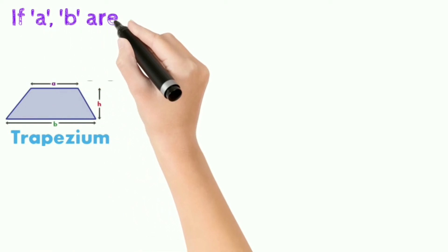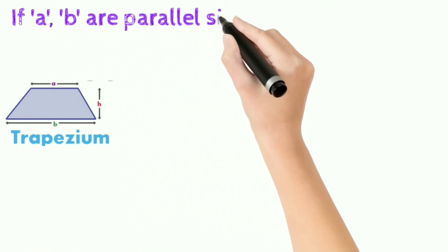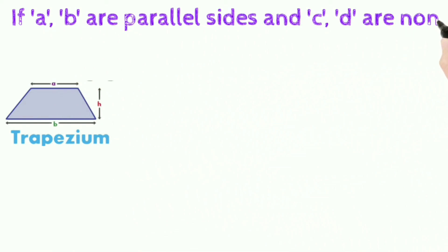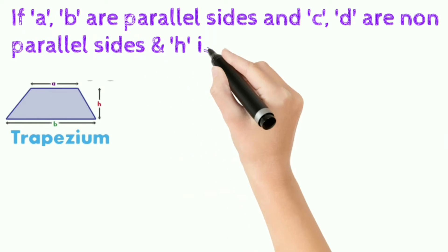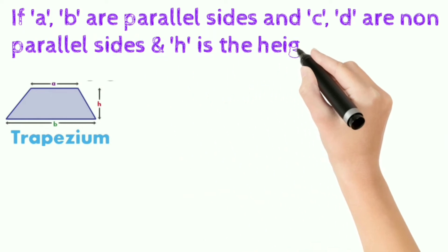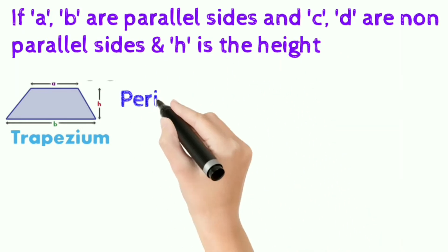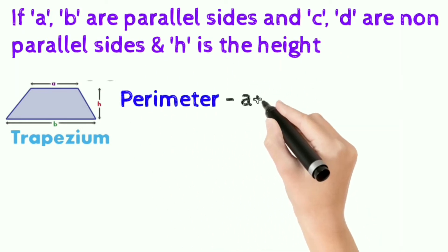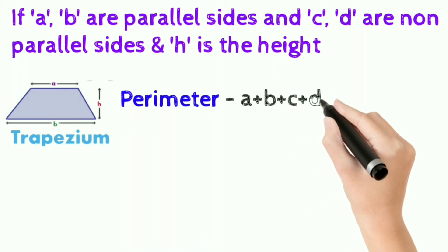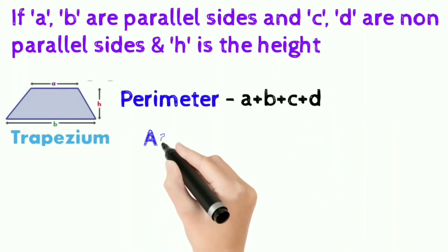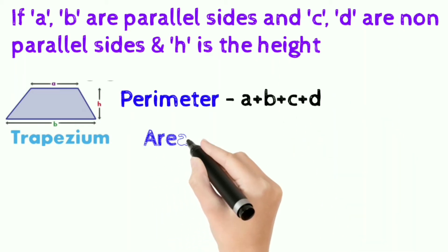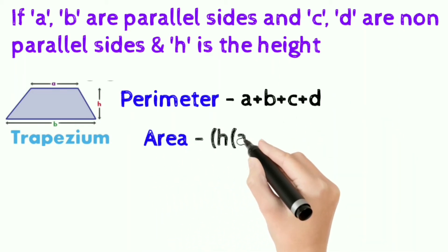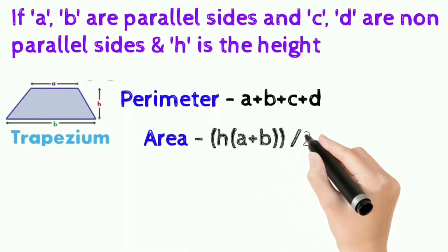Trapezium: if a and b are the parallel sides, c and d are the non-parallel sides, and h is the height, perimeter of the trapezium is a plus b plus c plus d, and area of the trapezium is h into (a plus b) divided by 2.